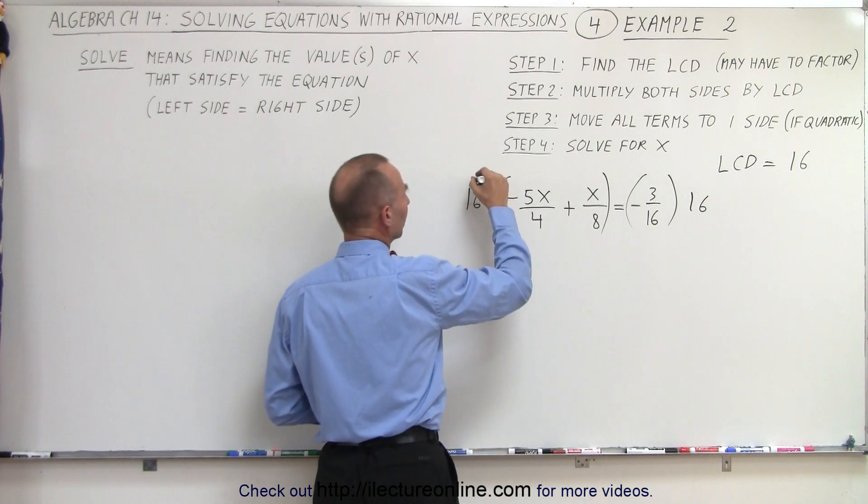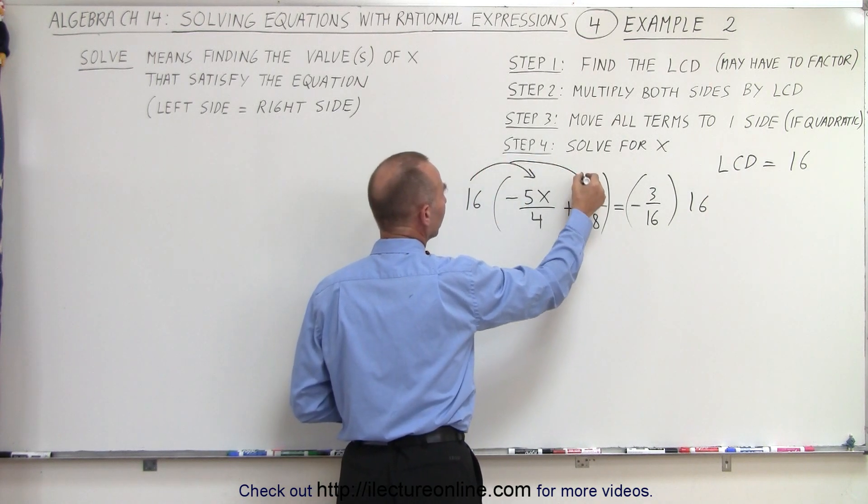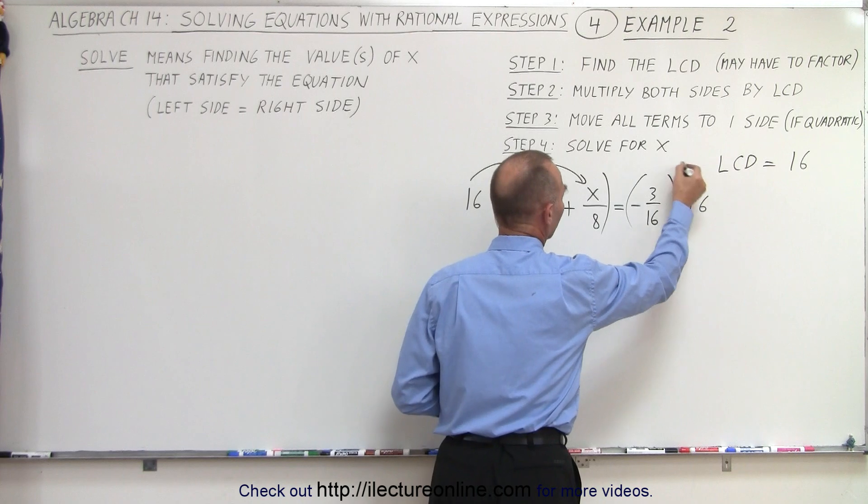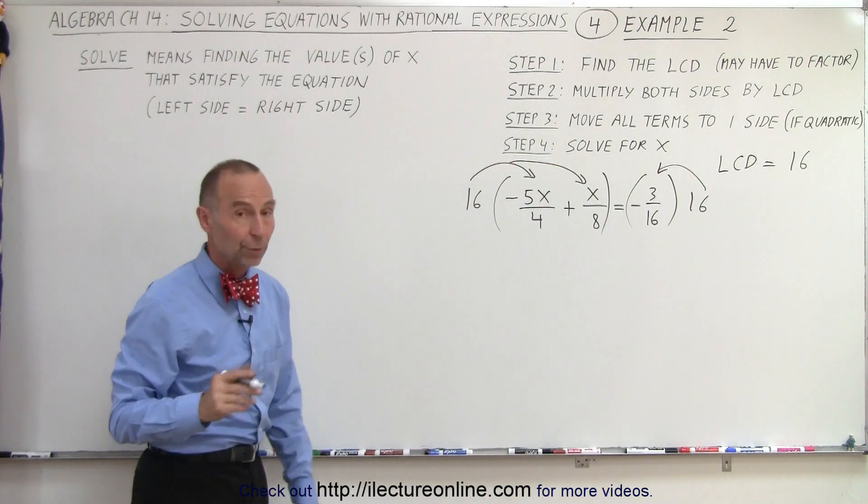On the left side, we're going to multiply the 16 by the first term and by the second term. Here we only have to multiply it times one of the terms. When we do,